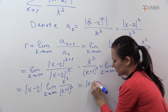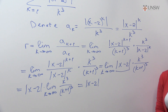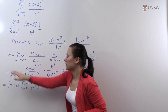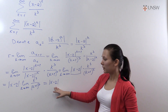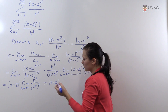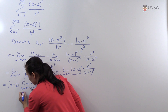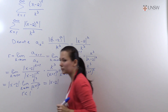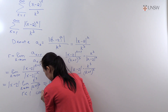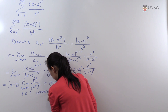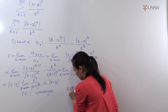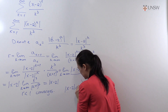When k goes to infinity the remaining limit equals 1, so we have r equals |x minus 2|. By the ratio test, the series converges when r is less than 1, that is, when |x minus 2| is less than 1.